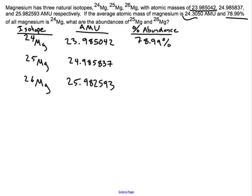And then we're also given the average here. So this guy is the average, that's the one that you would see on the periodic table.